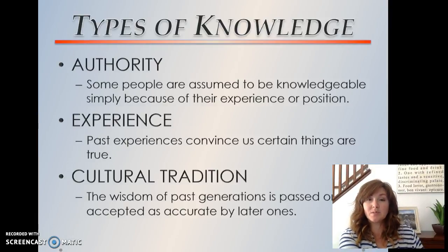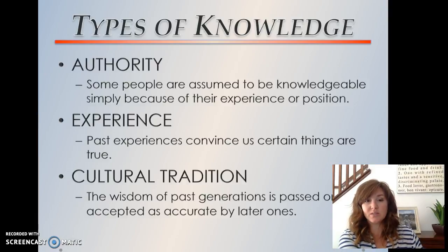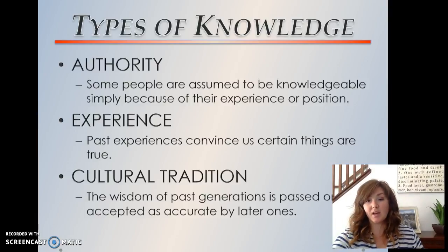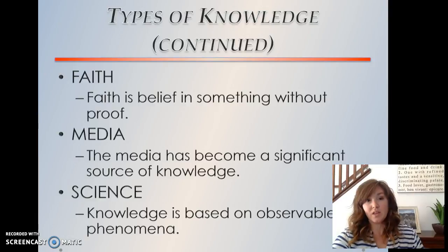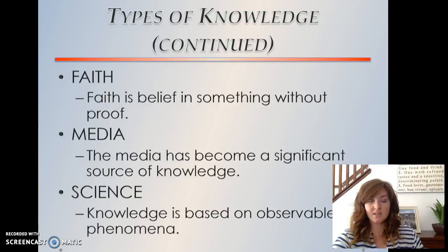Authority — some people are assumed to be knowledgeable simply because of their experience or position. One's own experience or past experiences convince us certain things are to be true. Cultural tradition is the wisdom of past generations being passed on and accepted as accurate by later ones. Faith is belief in something without scientific proof. Media has become a significant source of knowledge — we talked about that a little bit with social institutions. Science is knowledge based on observable phenomena.